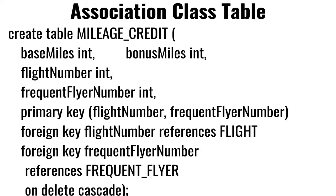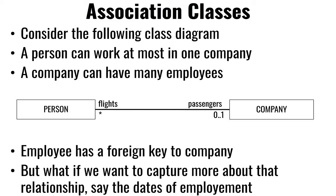The association table doesn't only have the foreign keys — it also has other fields like the base miles, flight number, and flyer number. It also enforces uniqueness between the flight number and the frequent flyer number, so you can't get credit for the same flight twice. You only get credit for that particular flight.